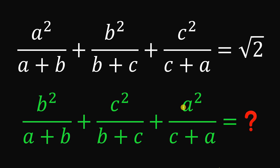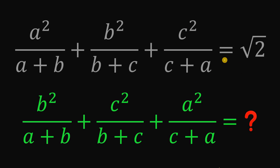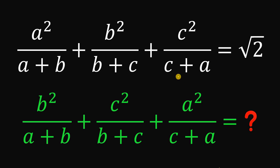Can you solve this math challenge? Here's the question. Given the equation a squared over a plus b, plus b squared over b plus c, plus c squared over c plus a equals square root of 2, the goal is to evaluate the expression b squared over a plus b, plus c squared over b plus c, plus a squared over c plus a.